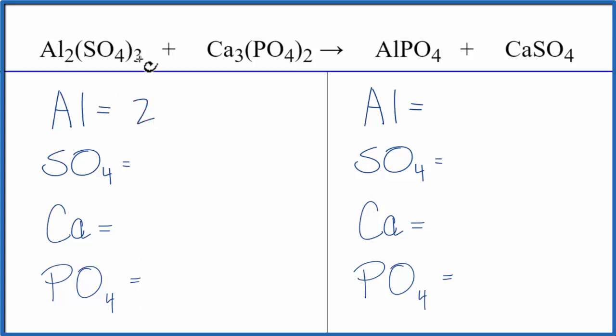Two aluminums, three sulfates, three calciums, and two phosphates. On the product side of the equation, one aluminum, one sulfate, one calcium, and one phosphate.